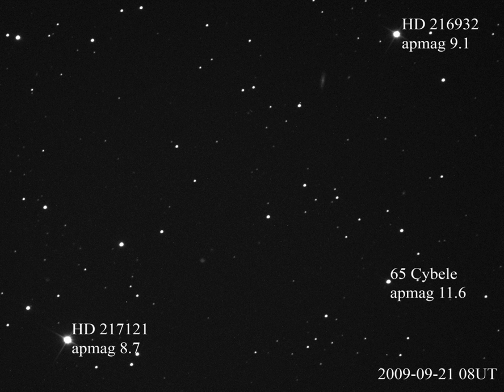In 1856, Norman Robert Pogson formalized the system by defining a first magnitude star as a star that is 100 times as bright as a sixth magnitude star, thereby establishing the logarithmic scale still in use today. This implies that a star of magnitude M is about 2.512 times as bright as a star of magnitude M+1. This figure — the fifth root of 100 — became known as Pogson's ratio.